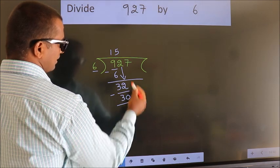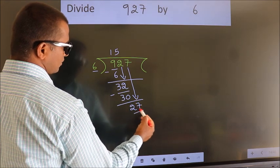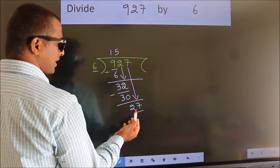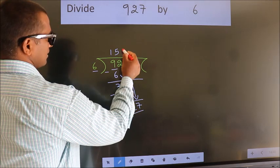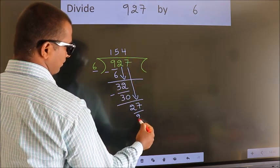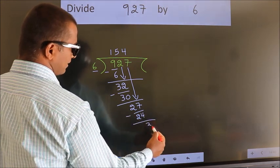After this, bring down the beside number. So, 7 down. So, 27. A number close to 27 in the 6 table is 6 fives 24. Now we subtract. We get 3.